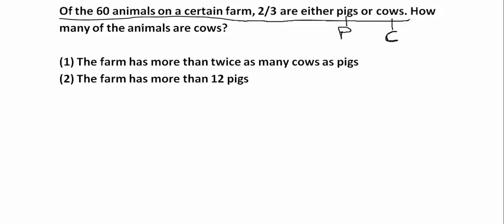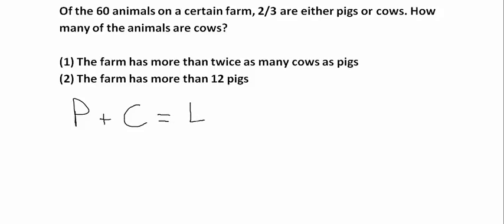He's telling me that two-thirds of the animals are either pigs or cows. So let's first calculate two-thirds of 60. Two-thirds times 60. So 2 times 60 is 120 divided by 3. So 120 divided by 3 is 40. So the number of pigs plus the number of cows is equal to 40, because the number of pigs plus the number of cows is equal to two-thirds of the 60 animals. So P plus C is equal to 40.